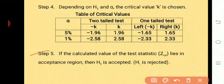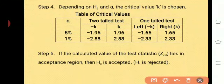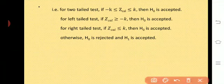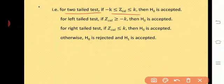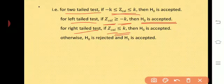Step 5: if the calculated value of the test statistic, that is Z calculated, lies in the acceptance region, then H0 is accepted and H1 is rejected. For a two-tailed test, if minus K ≤ Z calculated ≤ K, then H0 is accepted, where minus K and plus K are the table values from the statistical table. For a left-tail test, if Z calculated is greater than minus K, then H0 is accepted. For a right-tailed test, if Z calculated is less than or equal to K, then H0 is accepted.